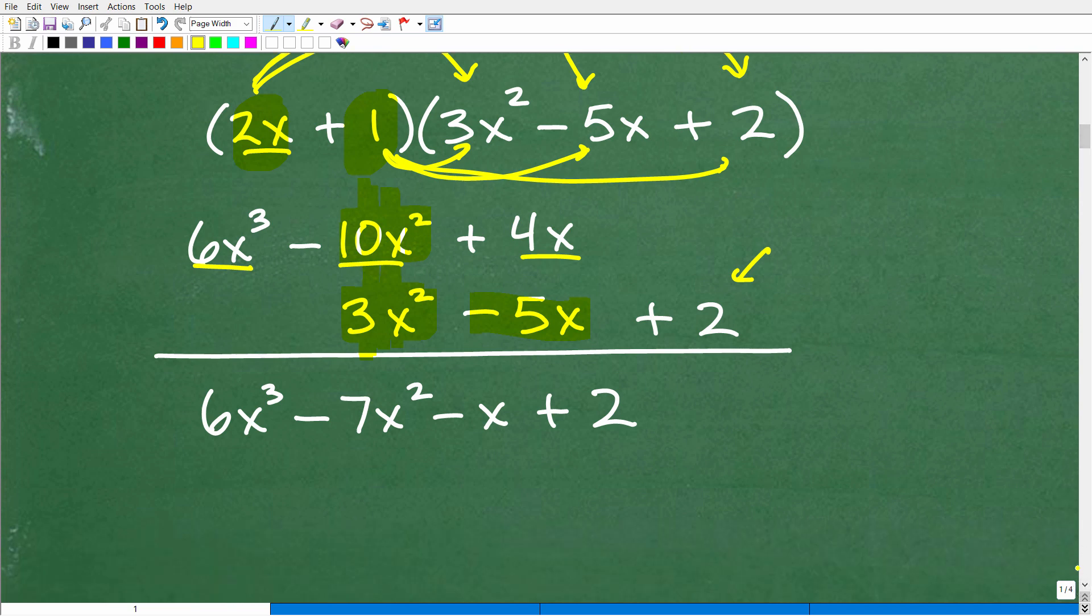Now, again, we're just going to simply combine like terms. So I only have one x cubed term. So I have 6x cubed. We want to write this in standard form, by the way. Highest to lowest power. Now I have negative 10x squared plus 3x squared. That's a negative 7x squared. 4x plus a negative 5x is negative 1x plus 2. And this is the answer.